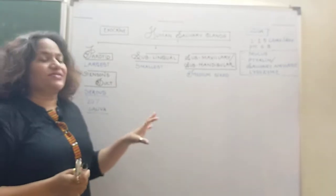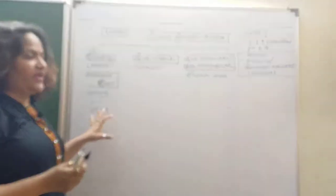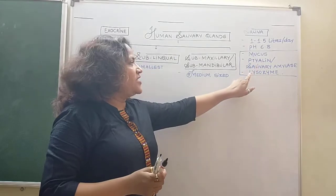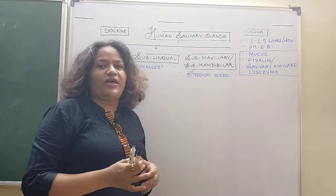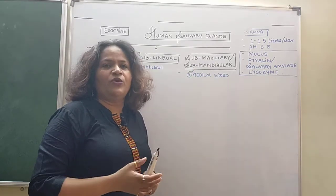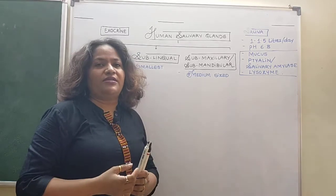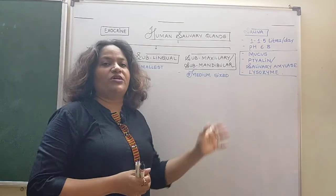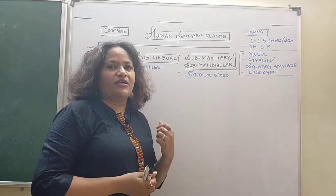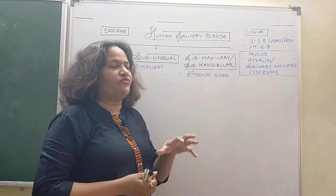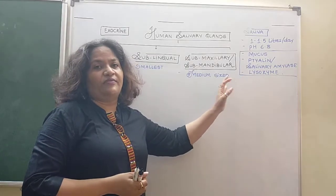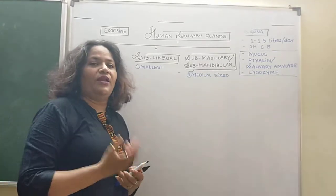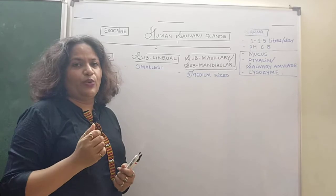Even though the parotid contributes only 20% of saliva, it has an important contribution: it contains the enzyme ptyalin as well as lysozyme. Lysozyme plays an important role in the immune system — it kills bacterial cell walls, forming an immune response. So whenever we consume food, even if it has some bacteria, a few may be killed by the lysozyme poured into the saliva by the parotid gland.